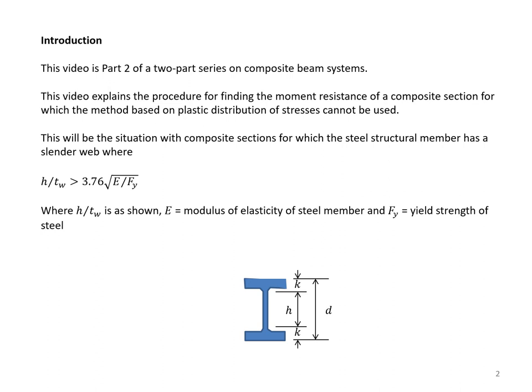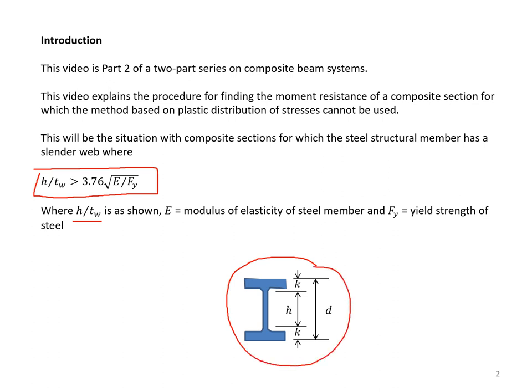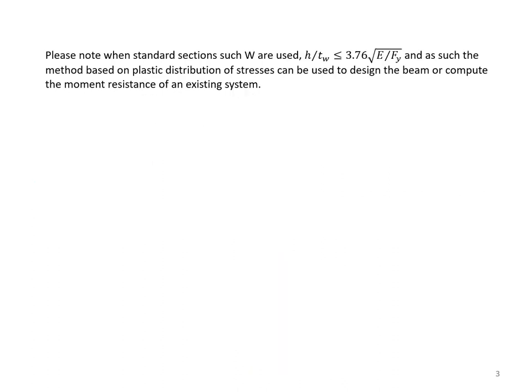This will be the situation with composite sections for which the steel structural member has a slender web where H over TW is larger than 3.76 times the square root of E over Fy. H over TW is a measure of the slenderness of the web of the cross section. E is the modulus of elasticity of steel and Fy is the yield strength of steel. When standard sections such as W sections are used, H over TW is smaller than this limit, and the method based on plastic distribution of stresses can be used to design the beam or compute the moment resistance.